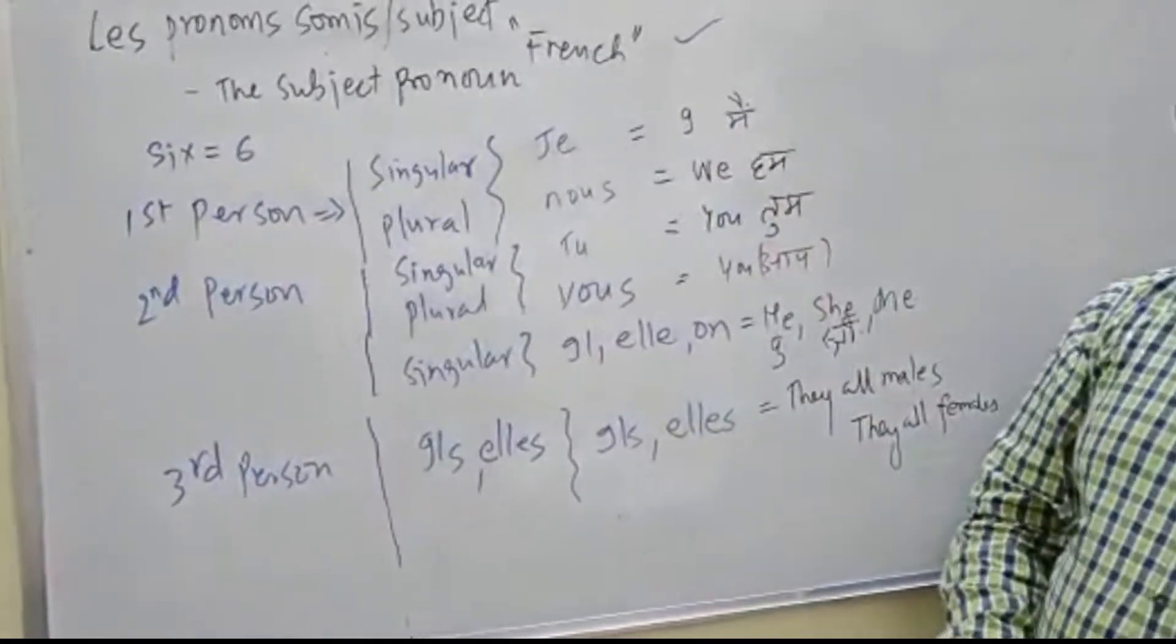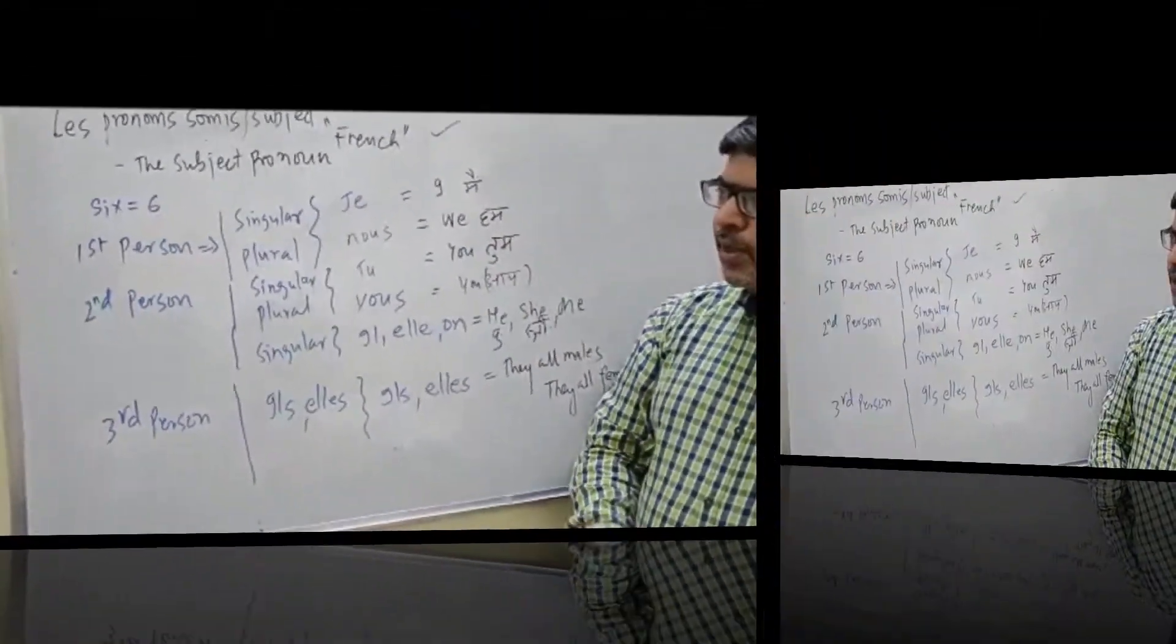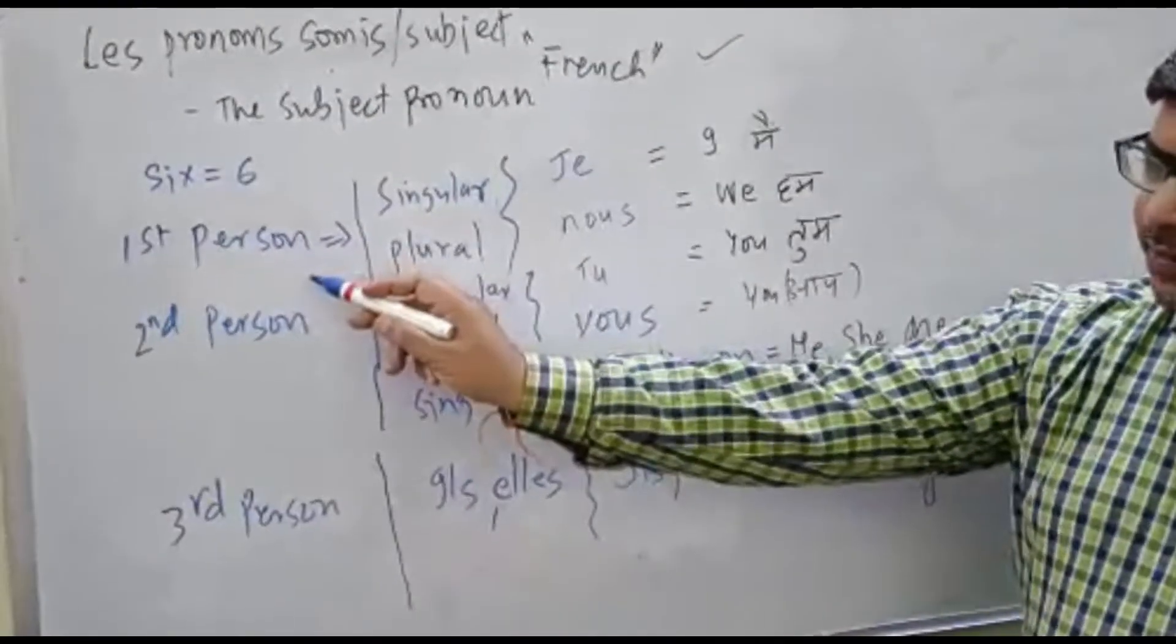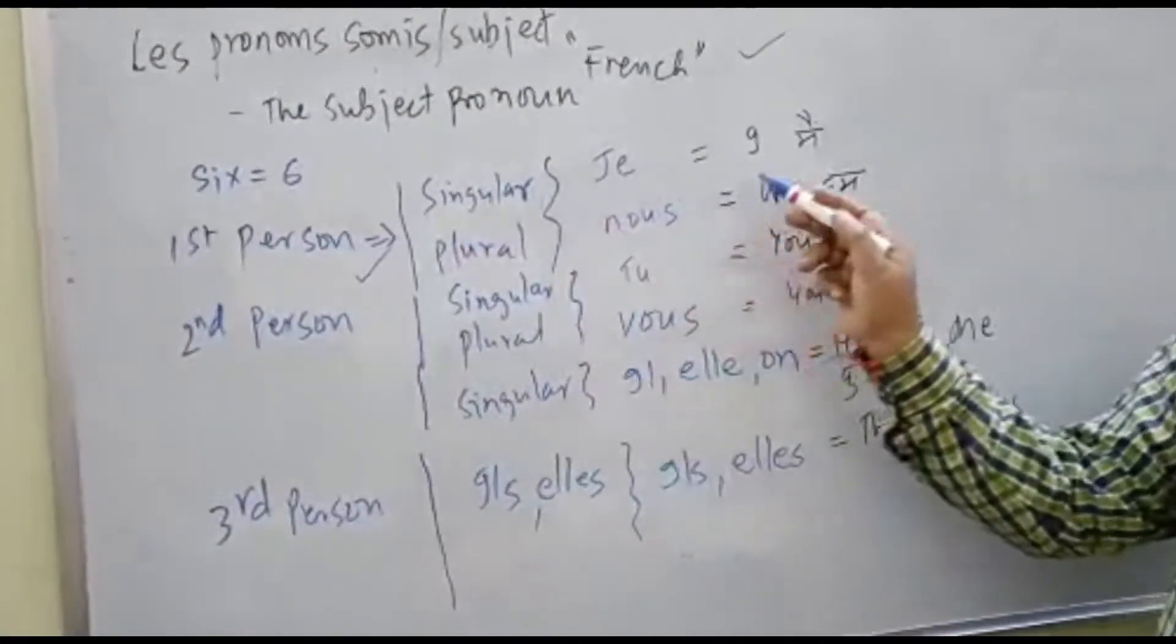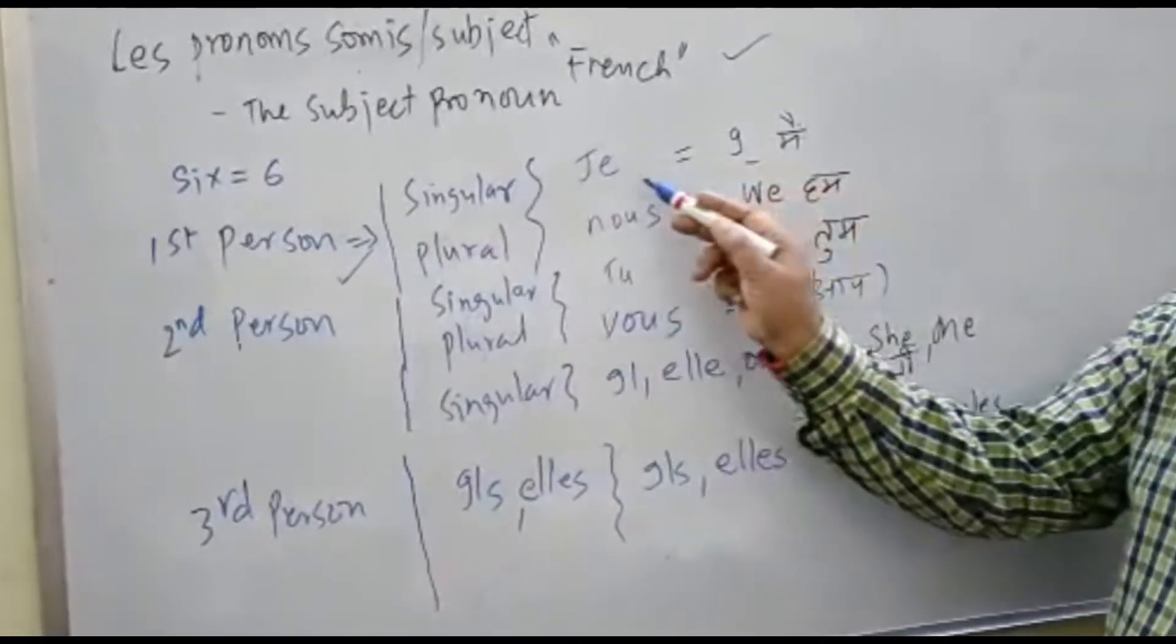In the language of French, which is called le pronom sujet. The first person that we are talking about is I, that is called je. The meaning is may, singular first person.